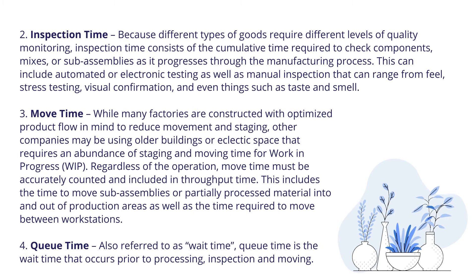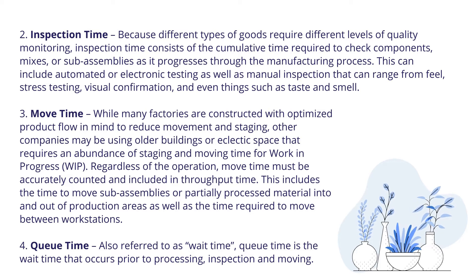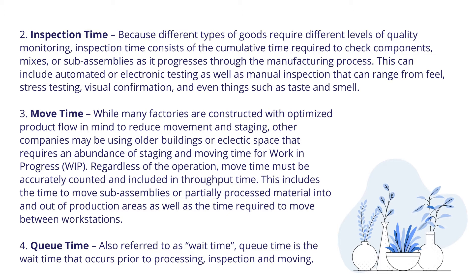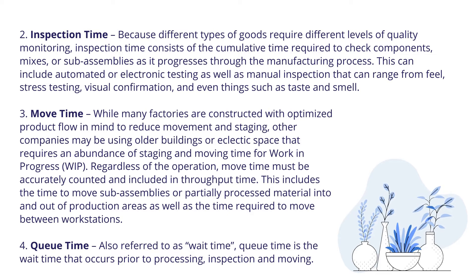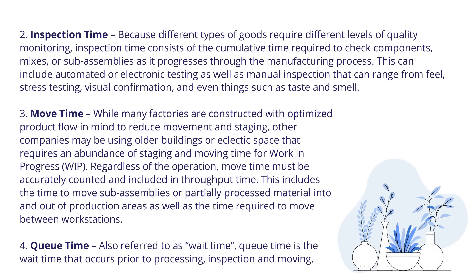Second, inspection time. Because different types of goods require different levels of quality monitoring, inspection time consists of the cumulative time required to check components, mixes, or sub-assemblies as they progress through the manufacturing process. This can include automated or electronic testing, as well as manual inspection that can range from feel, stress testing, visual confirmation, and even things such as taste and smell.